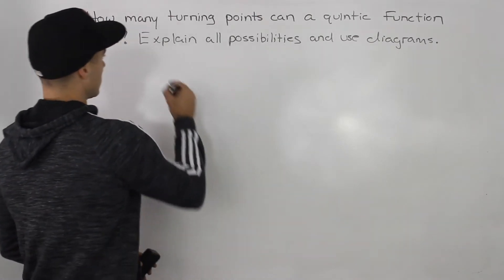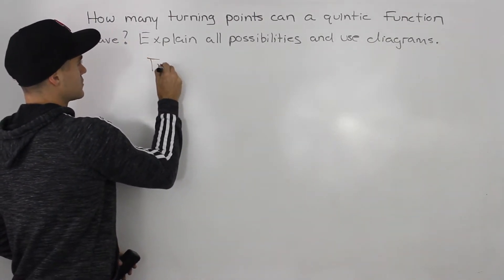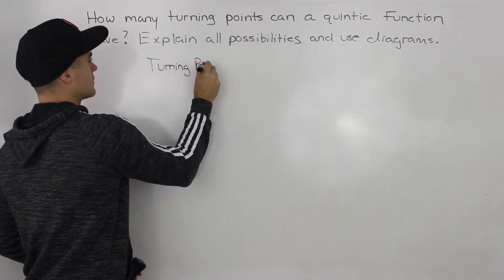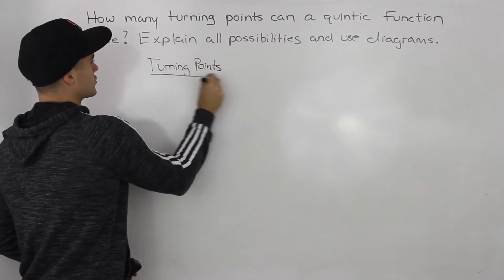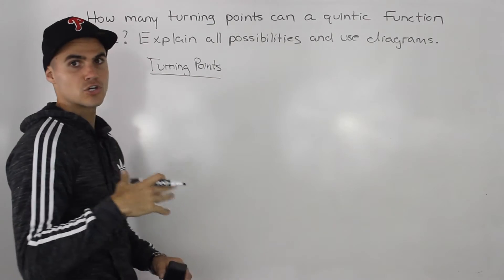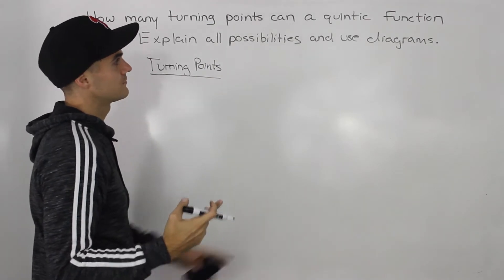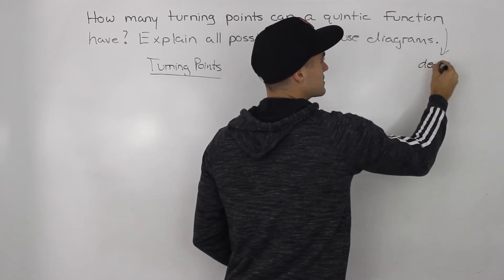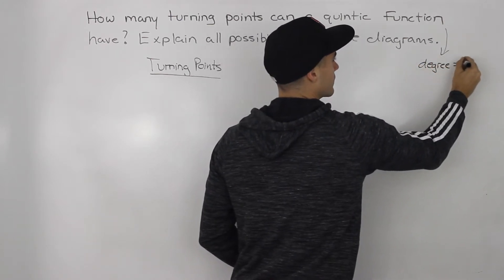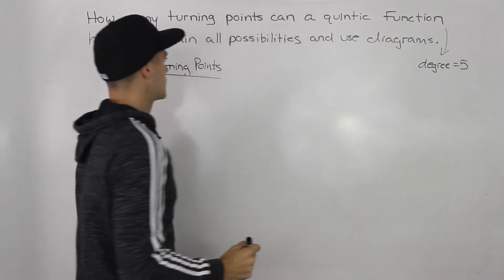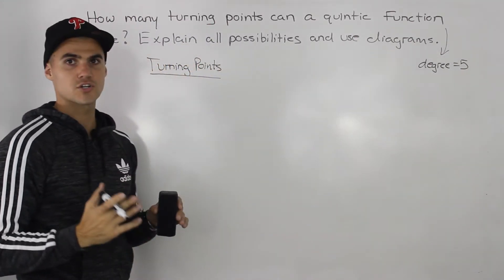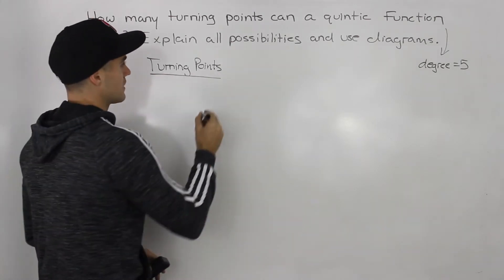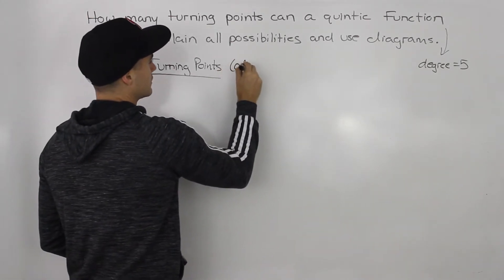If you remember when we talked about turning points in the lecture videos, turning points depend on the degree of the function. A quintic function has a degree of five. The turning points depend on whether a function has an odd degree or an even degree, and a degree of five is an odd degree.